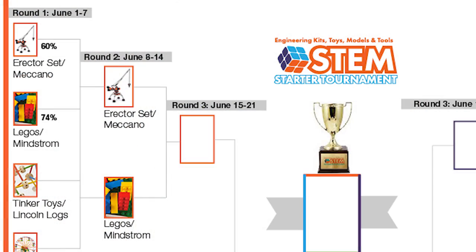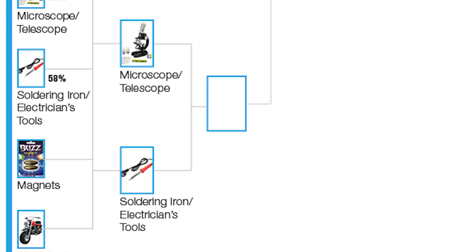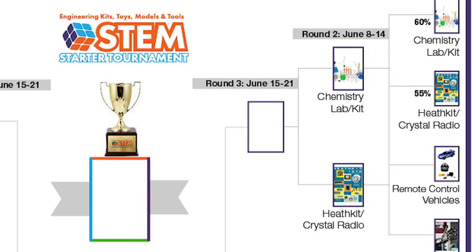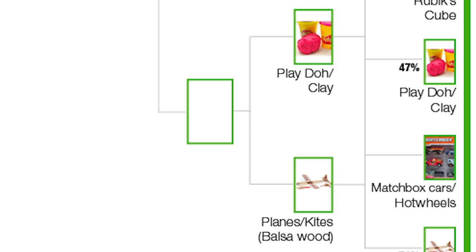We have Erector Set vs. Lego Mindstorm, Microscopes and Telescopes vs. Soldering Iron and Electronic Tools, Chemistry Lab and Kits vs. Heath Kit and Crystal Radio, and Play-Doh vs. Clay vs. Planes and Kites that are made of balsa wood.